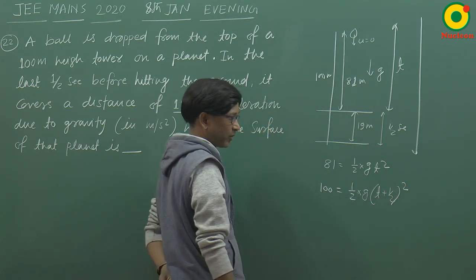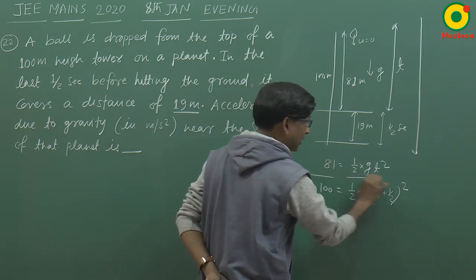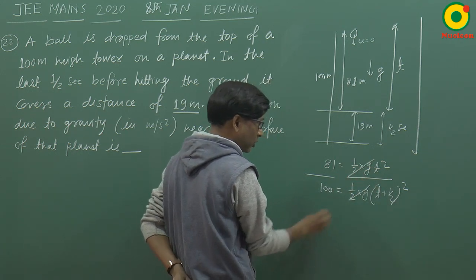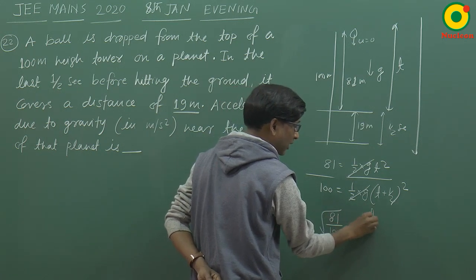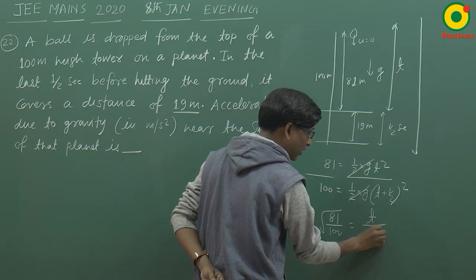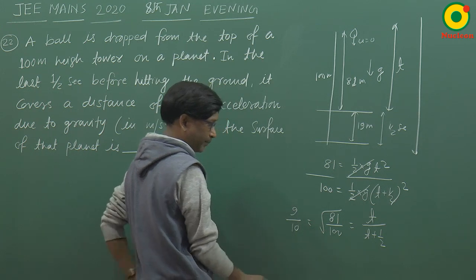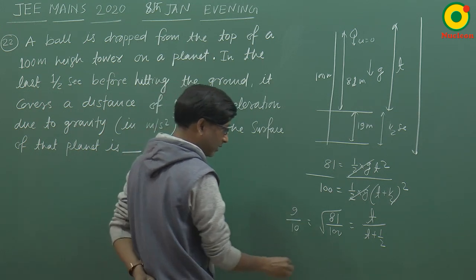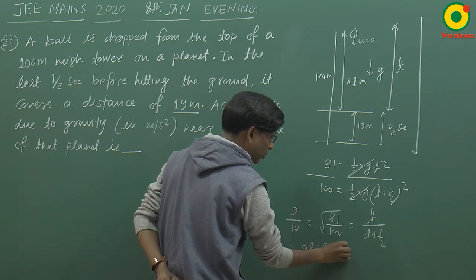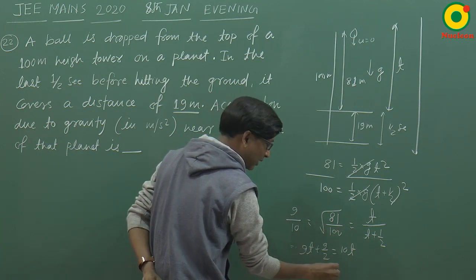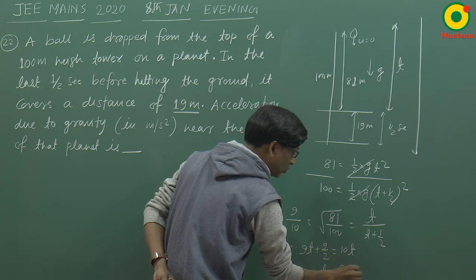Total time होगा (T + ½)² — इन दोनों को divide करेंगे तो G/2 cancel हो जाएगा। आएगा 81/100 का root = T/(T + ½)। 81 का root होता है 9 और 100 का 10। Cross multiply करने पर 9T + 9/2 = 10T। 9T को उधर ले जाने पर T का value हो जाएगा 9/2 seconds।